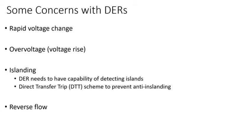These are just some concerns with DERs as they connect to the distribution system. First, rapid voltage change — take solar for instance, they're intermittent, so when clouds pass over it can cause voltage change.